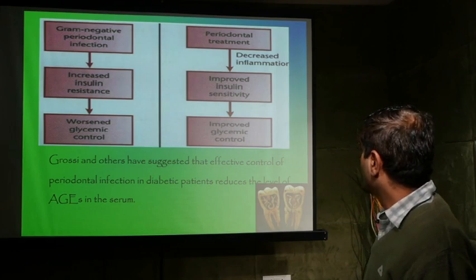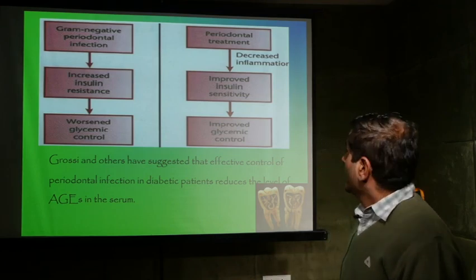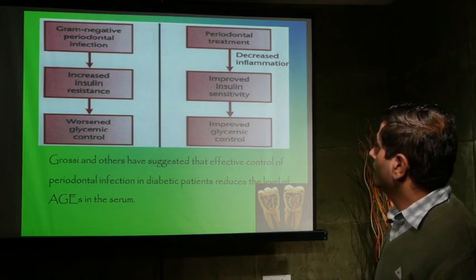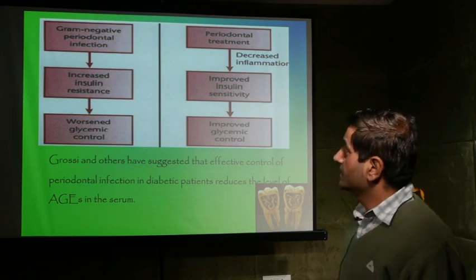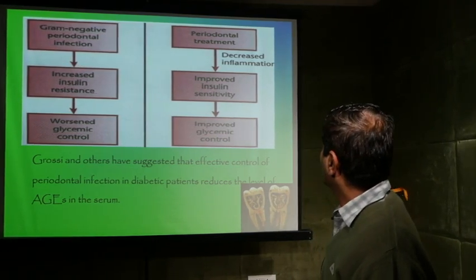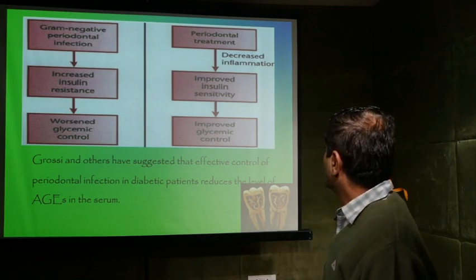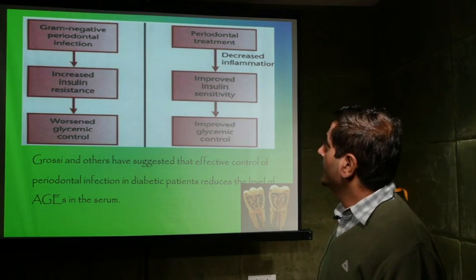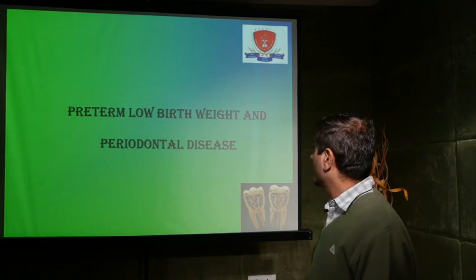In 1902, it was suggested 'better no teeth than septic ones.' Grossi and others have suggested that effective control of periodontal infection in diabetic patients reduces the level of advanced glycation end products in the serum. This flowchart shows the bi-directional relationship between diabetes mellitus and periodontal disease. Periodontal infection caused by gram-negative bacteria increases insulin resistance and worsens glycemic control. Conversely, periodontal therapy decreases inflammatory load, which improves insulin sensitivity and finally improves glycemic control — an ideal example of a bi-directional relationship.